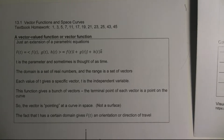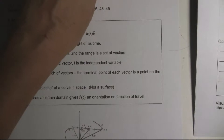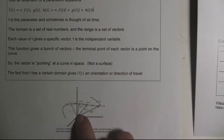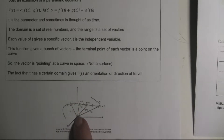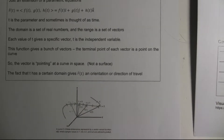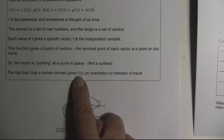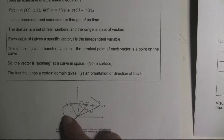Each value of t gives a specific vector. t is the independent variable, so this function gives a bunch of vectors, and the terminal point of each vector is a point on the curve. For example, at t = -1, that's the terminal point of the vector, and it's a point on the curve. At t = 0, that's also a point on the curve. So your vector is pointing at the curve in space, creating a curve — not a surface — and giving it direction and orientation.